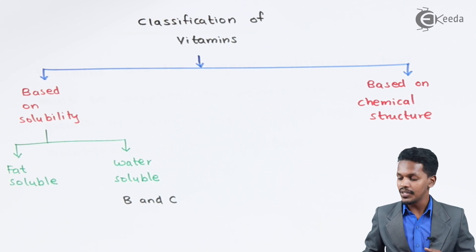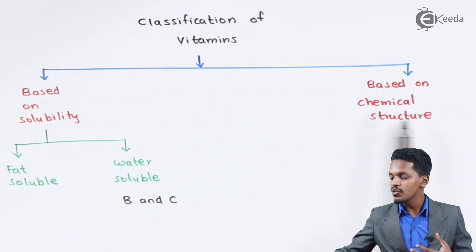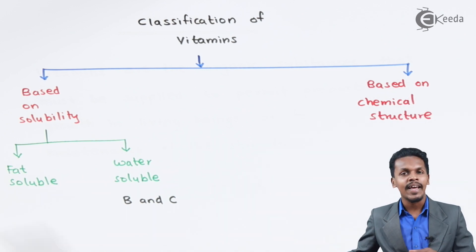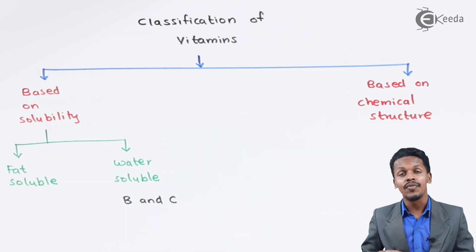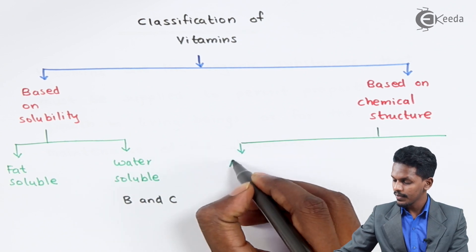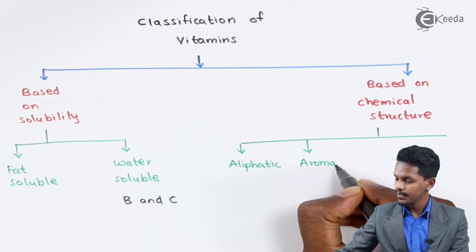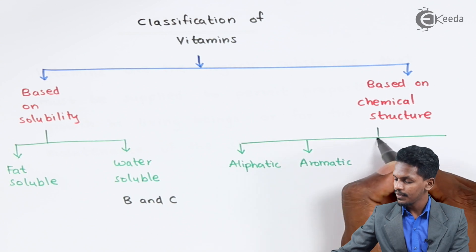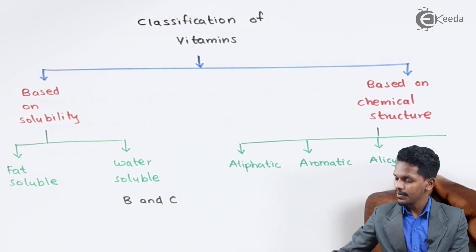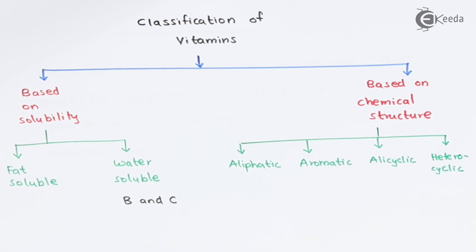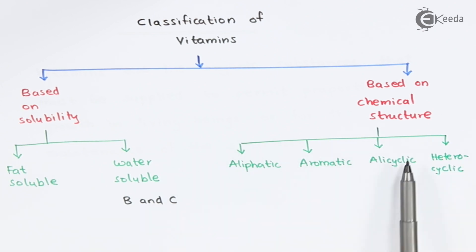Talking about the next classification — classification based upon the chemical structure. Based on this, vitamins are classified into four types: aliphatic vitamins, aromatic vitamins, alicyclic vitamins, and heterocyclic vitamins.